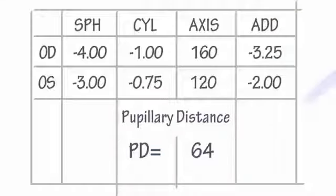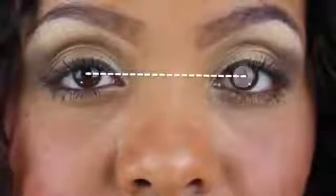And finally, we have PD, which means pupillary distance. And it's pretty straightforward. PD simply means the distance between one pupil and the other.